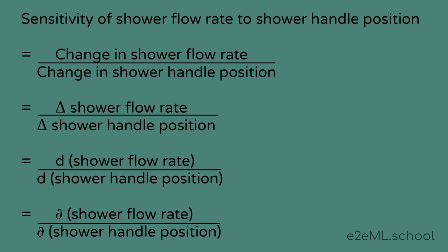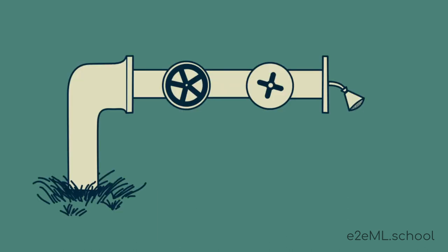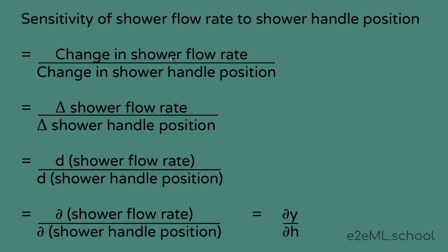To make our conversation even a little more concise, we can give things shorter names. We'll call the shower flow rate Y, the shower handle position H. We can call the flow rate in the house X, and the pressure in the water main W, and the position of the main valve M. Now we can use these short names to call the sensitivity of the shower flow rate to the shower handle position, dY/dH.